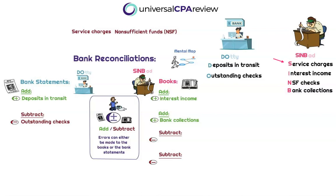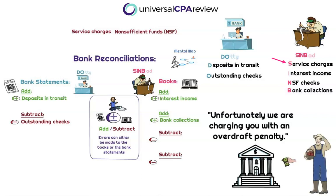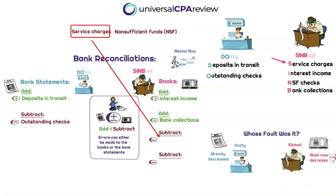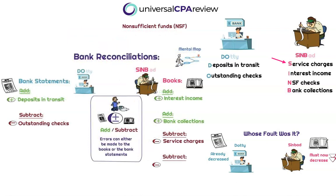What about service charges? That's the S in Sinbad. Sometimes the bank will have something like an overdraft penalty — or just a service charge for banking with them. This is money being charged to the company account. The bank statements automatically reduce the cash balance by, say, $25 for a service charge. When Sinbad goes back and looks at the bank statements, he sees that $25 reduction and has to reduce it from the books as well so that it ties out.